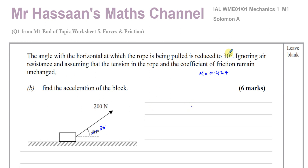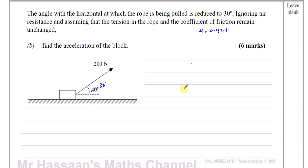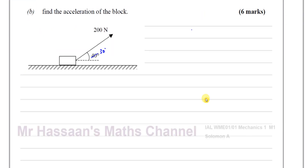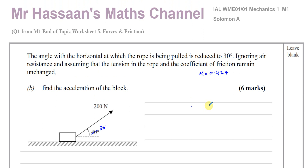For part B, the angle with the horizontal at which the rope is pulled is reduced to 30 degrees. Ignoring air resistance, assuming the tension remains 200 newtons and the coefficient of friction remains 0.424, find the acceleration of the block. As the angle has reduced, the horizontal component of the force is now larger, so the block will now move since friction cannot increase any further.